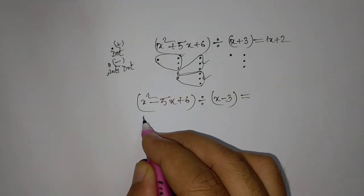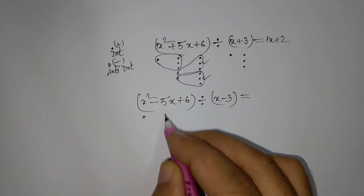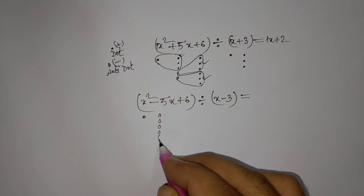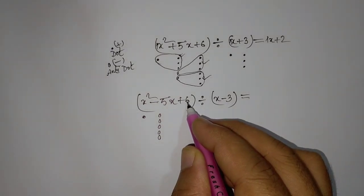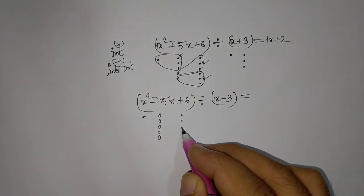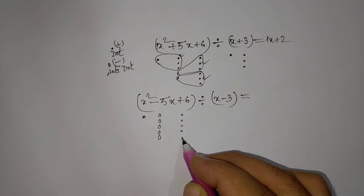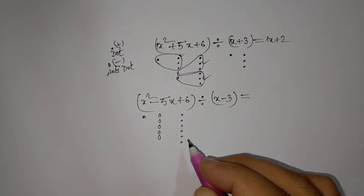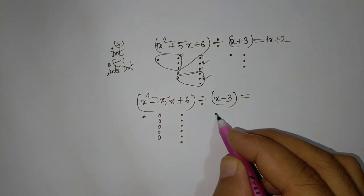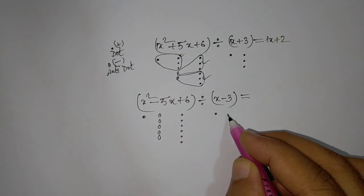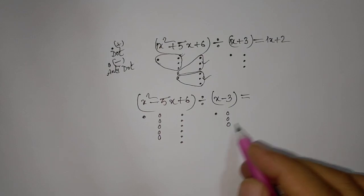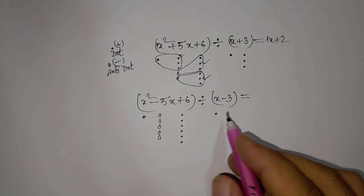Similar approach. For x: active dot. For negative 5x, we take anti-dot. First anti-dot. For positive 6, we take active dot negative. For x coefficient 1, we take active dot. For negative 3, we take anti-dot — three. Now again, we group them.